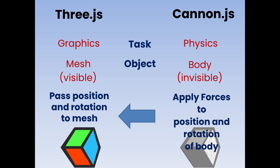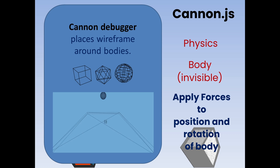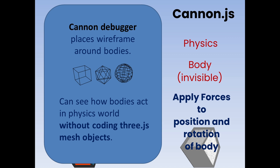When we are developing our projects, we can avoid a lot of work and coding by eliminating the code for the Three.js mesh objects. We do this using the Cannon debugger. The Cannon debugger places a wireframe around the rigid bodies in the physics world so we can see how these physics bodies act without having to code the Three.js mesh objects. That saves a lot of work — we just add a few lines of code for the Cannon debugger and it will show where these invisible bodies are located and how they are acting.